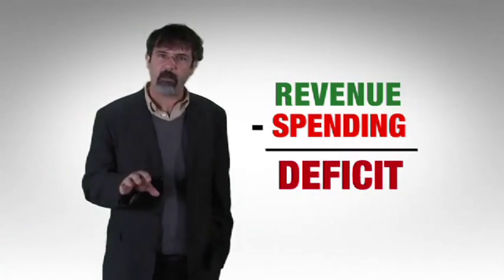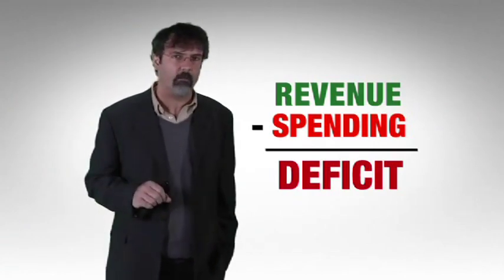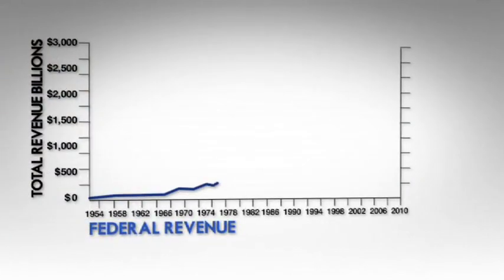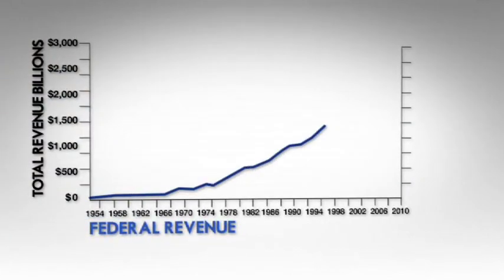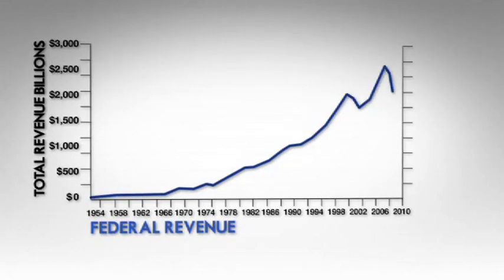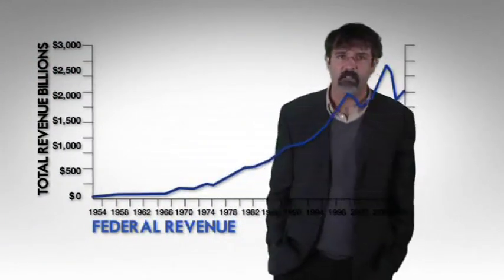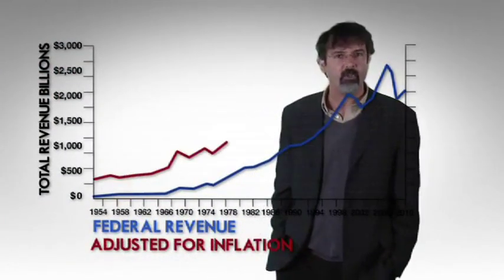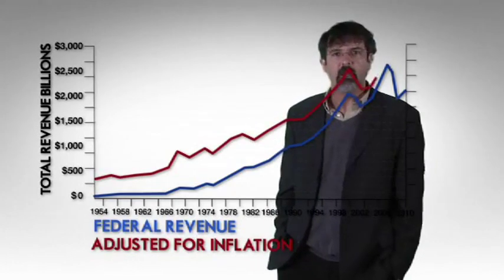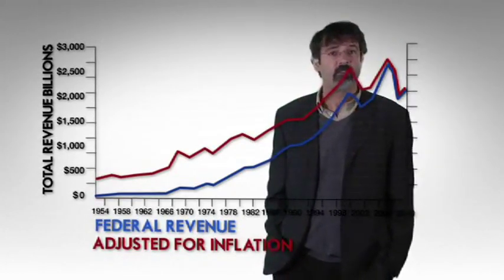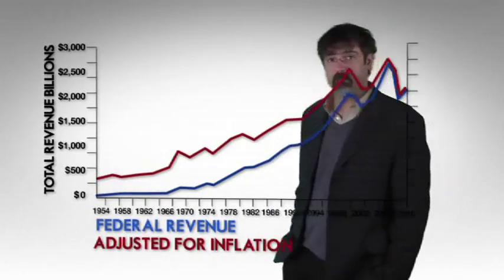So perhaps the debt problem is really a revenue problem. How much tax revenue has the government collected over time? Federal tax revenue today is more than 20 times what it was in the 1950s. But that's not a fair comparison — prices are a lot higher than they were in the 1950s, so let's adjust tax revenues to account for inflation. Adjusted for inflation, tax revenue is more than five times what it was in the 1950s.